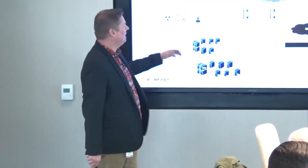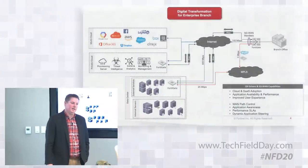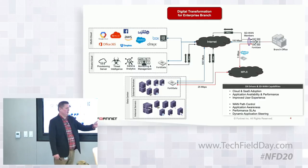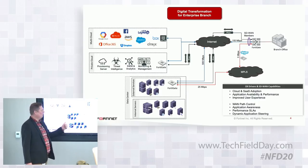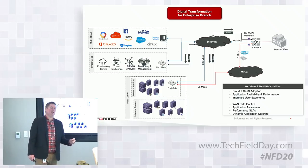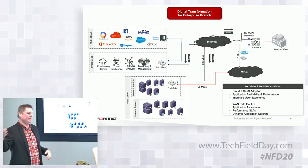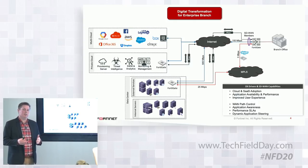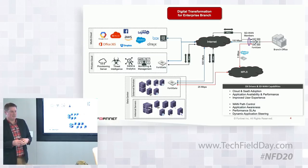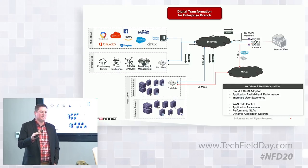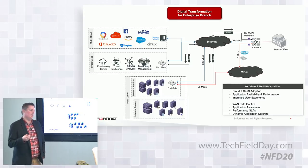You can build an IPsec tunnel overlay over MPLS. Ultimately, digital transformation is a huge driver for SD-WAN and branch modernization. The key things we'll focus on in the demo are WAN path control, application awareness, and performance SLAs — really helping protect the performance of those applications. When you're choosing which path to take, it's based on performance and user experience, improving that through direct internet access or quality of service through your MPLS. The result of application identification and WAN path control is dynamic application steering.